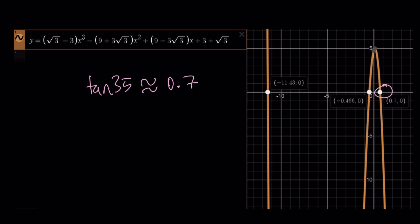is tangent 35, right? So, x equals tangent 35 here, because you can see on the coordinate system as well that one of the roots is pretty close to 0.7. But,